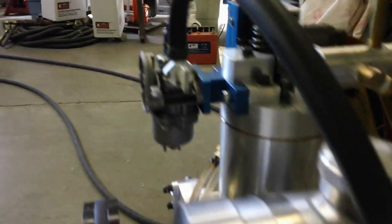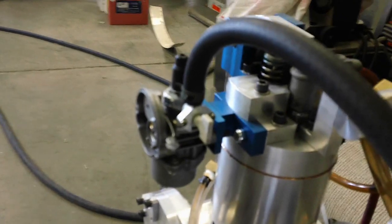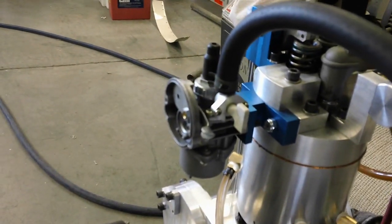Gasoline is gravity fed from a petcock in the fuel tank to an electric fuel pump. This pumps fuel to the carburetor bowl, which is normally gravity fed.